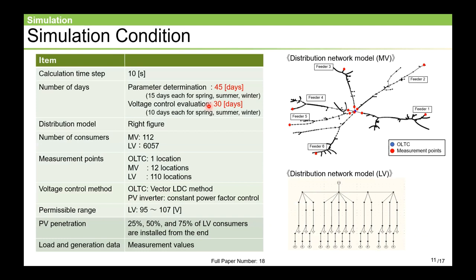Now, let me describe the numerical simulation conditions. We prepared a 45-day dataset for determining the optimal parameter and a 30-day dataset for evaluation. For this simulation, we used a six-feeder model. The red point in this figure indicates the measurement points. And three cases of PV penetration rates are prepared: 25%, 50%, and 75% of all LV consumers. And in all cases, PV is deployed from the end of the grid.